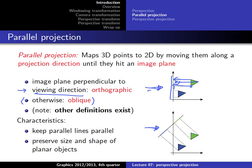An important note: there are different definitions of what is orthographic and what is oblique. Later when we talk about coordinate systems today, I stick closely to the notation from the book, because this is the theory part of the course. If you use a specific API they might use different phrasing or different naming conventions, so always be careful about context.